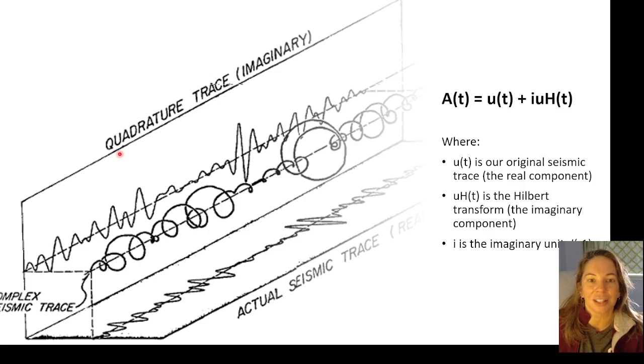And so this is why we call our instantaneous attributes the complex part, the imaginary part. This is a nice figure that I like to use where we have the actual seismic trace that we're able to observe and that quadrature trace, the imaginary trace, that's what the Hilbert transform is trying to get at.